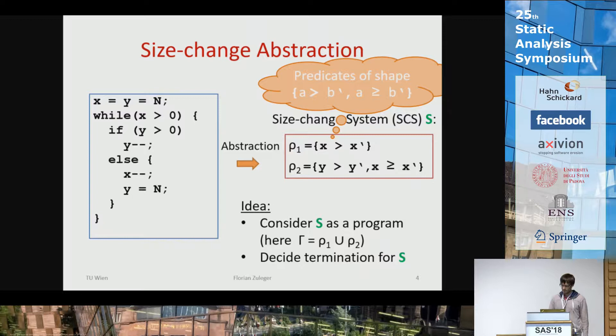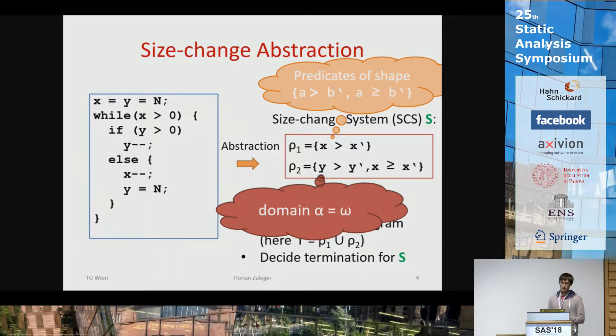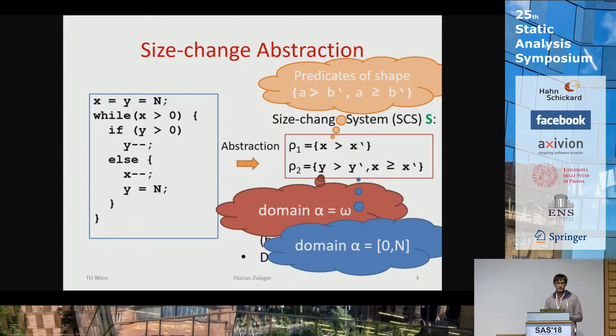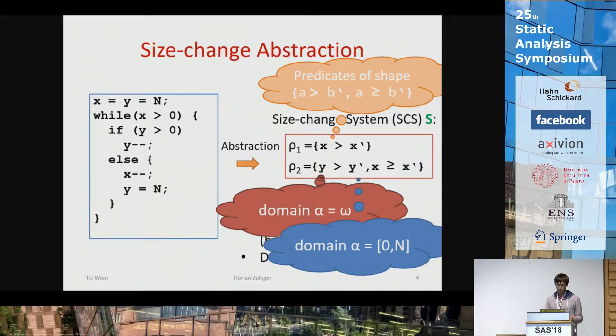When you view this as an abstract program, an interesting question is what the domain of these variables is. You can get a trivial answer from the type — for this kind of program it makes sense to assign natural numbers to the variables — but you can also do a pre-analysis using the octagon domain to discover that variables always take values between zero and n.